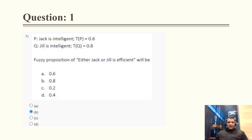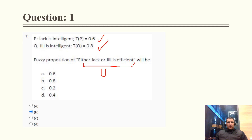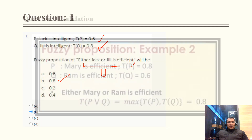Question 1: Jack is intelligent P, Jill is intelligent Q, TP equals 0.6, TQ equals 0.8. The question asks for the fuzzy proposition of either Jack or Jill. This is a union operation, so we take the maximum of 0.6 and 0.8, giving the correct answer of 0.8.